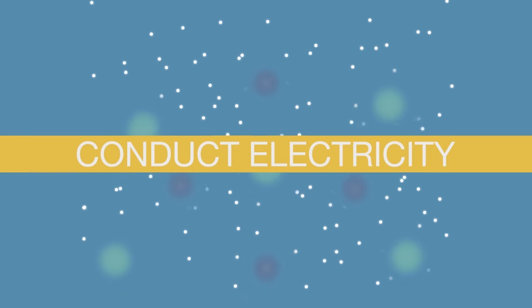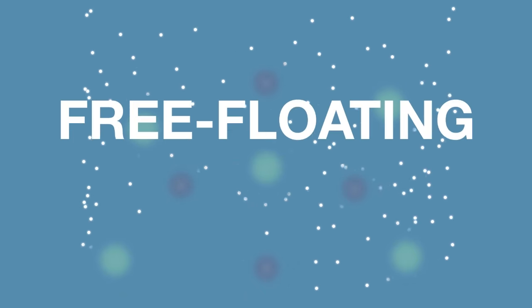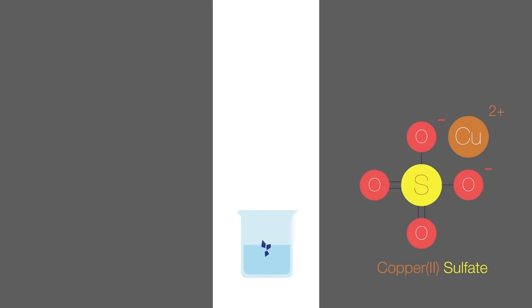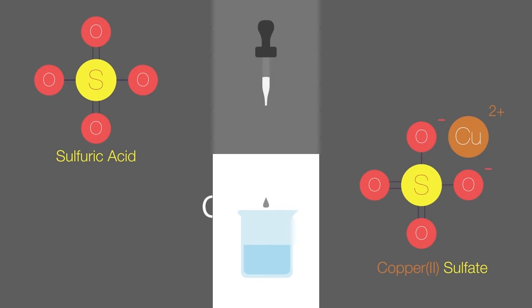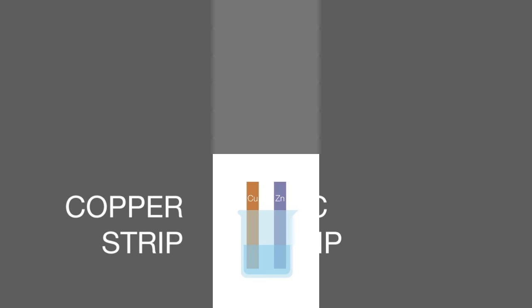This is made possible due to the presence of free-floating ions. We can dissolve copper(II) sulfate in water in a beaker, add a few drops of sulfuric acid, and place a strip of copper and a strip of zinc into the solution. These will act as electrodes.